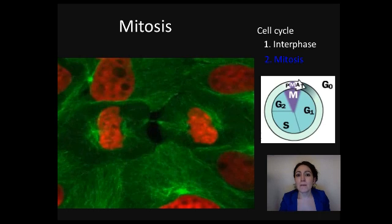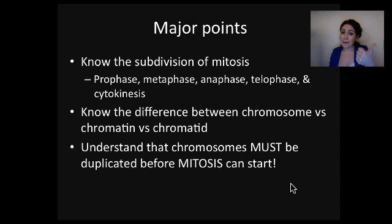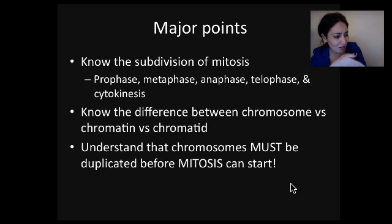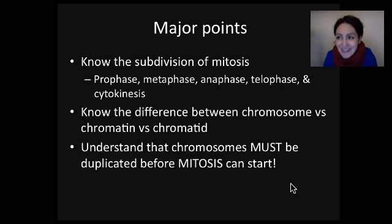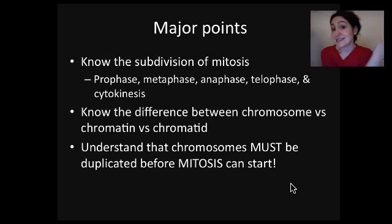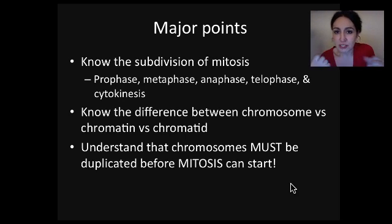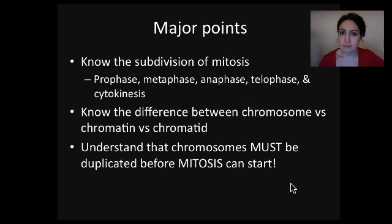Major points of mitosis: know the subdivisions. Prophase — nuclear envelope breaks down; metaphase — chromosomes align at the middle; anaphase — sister chromatids say bye-bye and pull apart; telophase — nuclear envelope reforms; cytokinesis — complete division of the cytoplasm. Know the difference between chromosome, chromatid, and chromatin. Understand that chromosomes must duplicate before mitosis can start. Well, that wraps up mitosis — I hope that was helpful, and keep dividing!